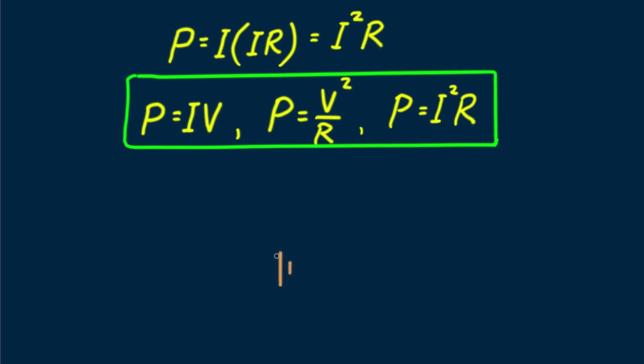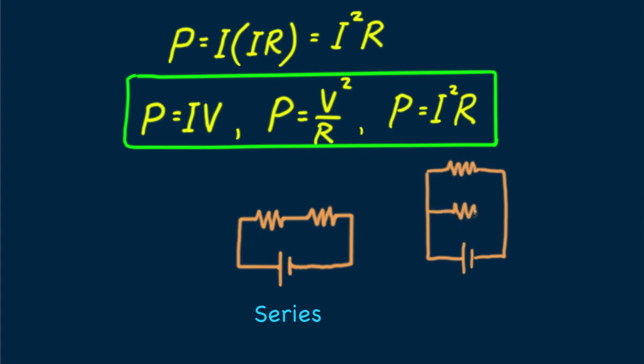Let me leave you with a question. Consider a pair of identical light bulbs connected to a battery. I'll use standard symbols for battery and bulb resistances. Will the battery last for a longer time if they're connected in series or in parallel? Or does it make a difference? Until next time, good energy.